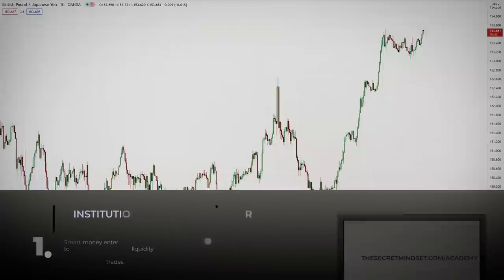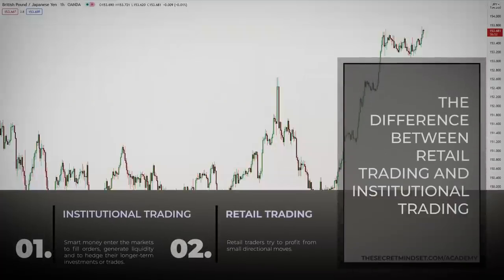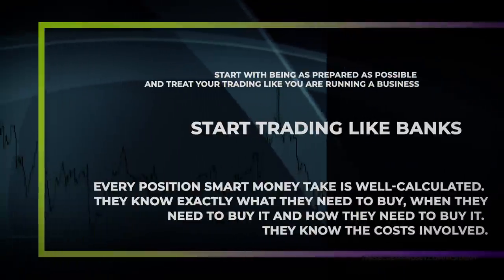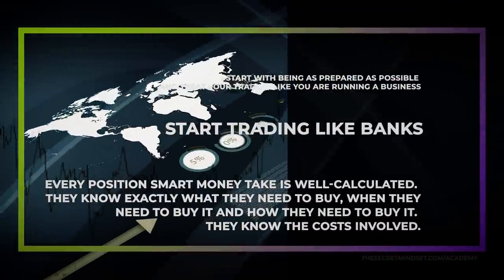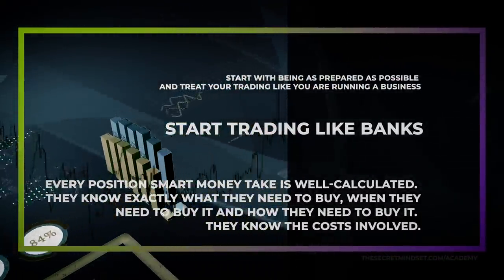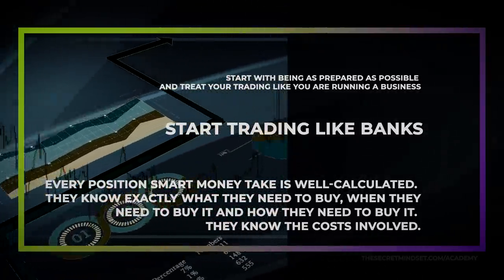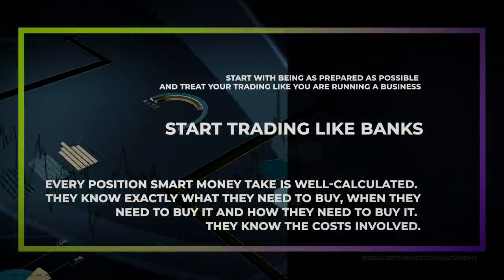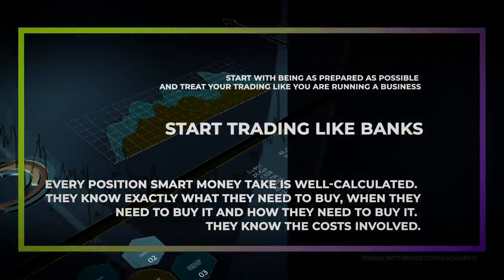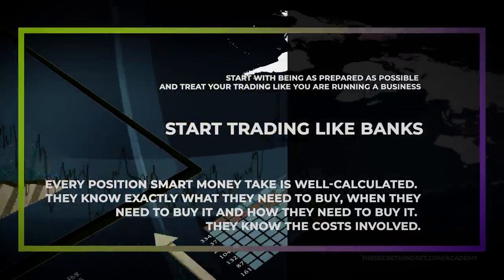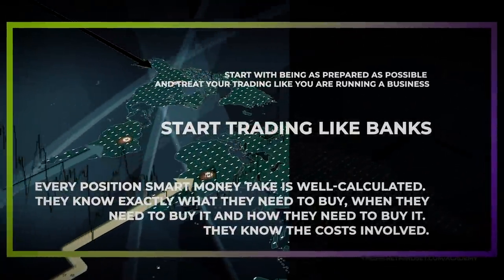Smart money enters the markets to fill orders, generate liquidity, and to hedge their longer term investments or trades. This is not how retail traders trade — this is the difference between retail trading and institutional trading. We try to profit from small, directional moves. So how to start trading like banks? Start with being as prepared as possible and treat your trading like you are running a business. Banks don't just let the RSI tell them when to enter. Every position they take is well calculated — they know exactly what they need to buy, when they need to buy it, and how they need to buy it. They know the costs involved, and that's how you should approach trading as well.